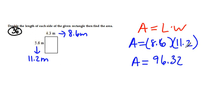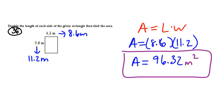8.6 meters times 11.2 meters, which gives us meters squared. There was no rounding rule listed, so we will give our exact answer of 96.32 meters squared.